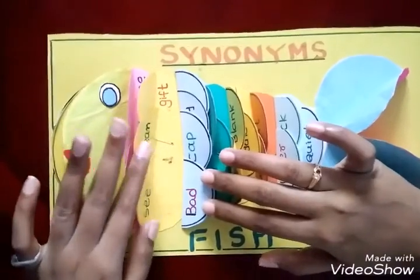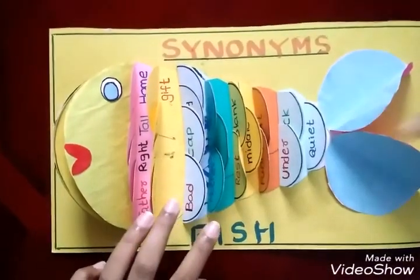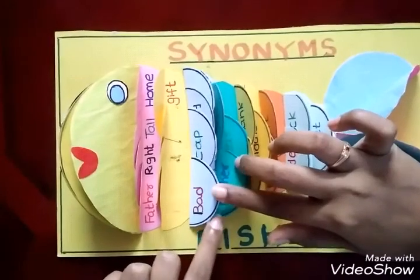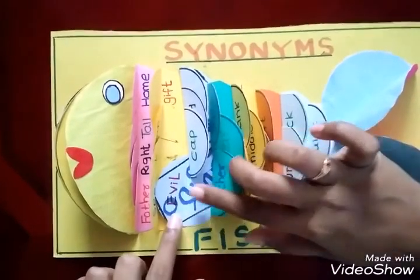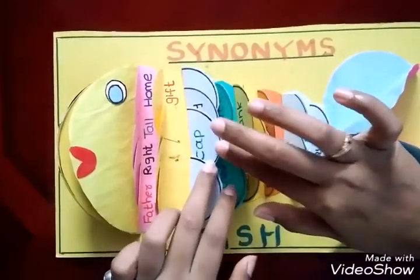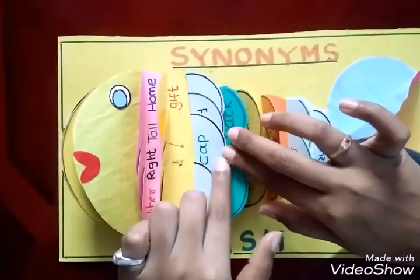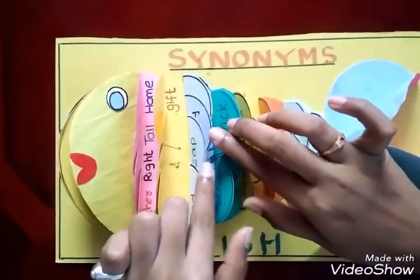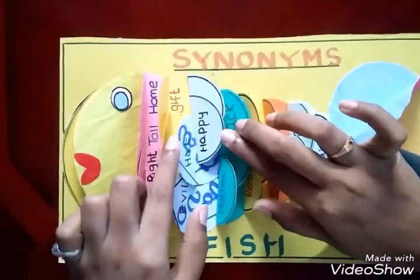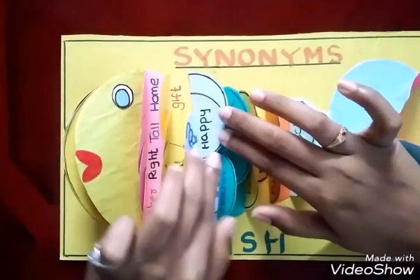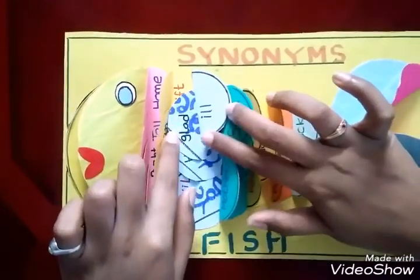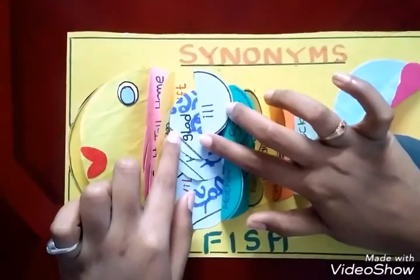And here let us see some more examples. 'Bad' — the synonym for bad is 'evil'. 'Cap' — the synonym for cap is 'hat'. And another word is 'happy', and the synonym for happy is 'glad'.